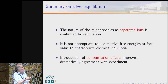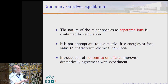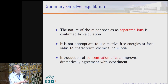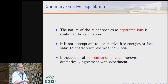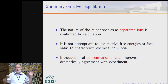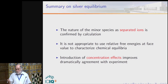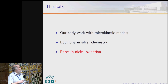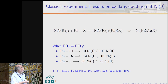We can provide a qualitative explanation: the ratio of cation to neutral depends on the equilibrium constant but also on the concentrations of solvent and anion, which are very different and affect greatly the proportion suggested by the equilibrium constant. So for this example, the nature of the ionic species is confirmed, and it is not appropriate to use relative free energies at face value. Instead, we must introduce concentration effects, which are very cheap to introduce but substantially improve agreement with experimental results.